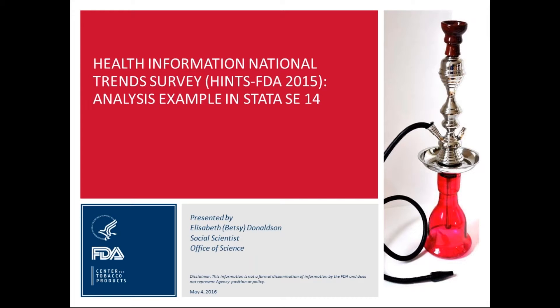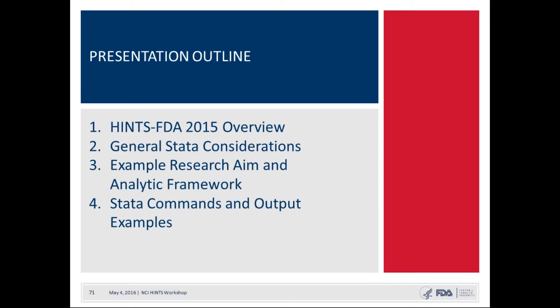This is an overview of my presentation. I'll briefly introduce HINTS FDA, since it's a little bit different in terms of the sampling strategy than previous cycles of HINTS. I'll give some general tips for working in Stata with these data, and then walk through an example I'm working on currently with colleagues at NCI and FDA. Throughout, I'll provide sample Stata commands and output examples. This presentation is focused on those who may be new to secondary data analysis or new to working in Stata.